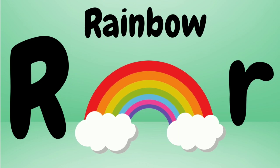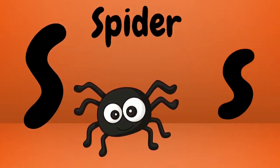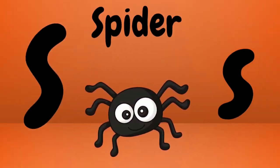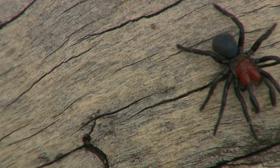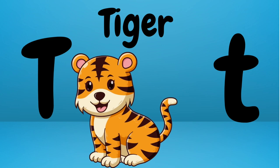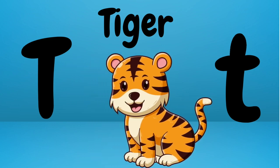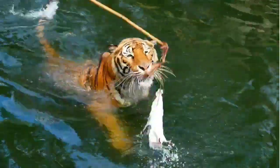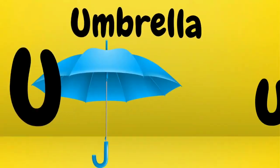R is for rainbow. Rainbow, rainbow — this is a rainbow. S is for spider. Spider, spider — this is a spider. T is for Tiger. Tiger, tiger — this is a tiger.